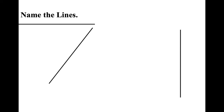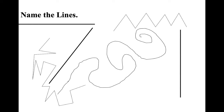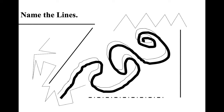So are you guys ready? Get set. Name these lines. What line is this? Horizontal, vertical, diagonal, curved, zigzag, jagged, broken, and thick and thin. So hopefully, the more we practice, you can actually name all of these lines without having help from me.